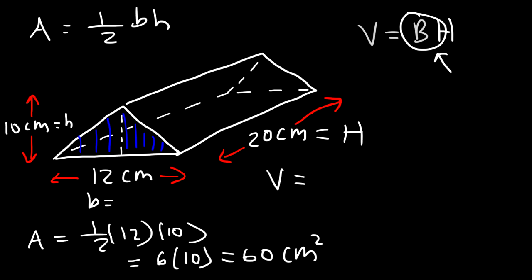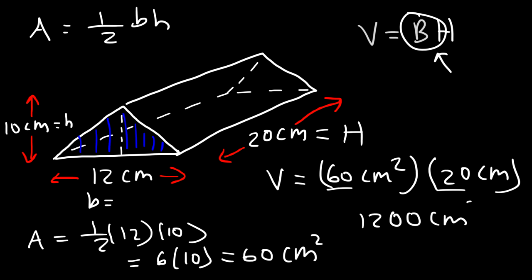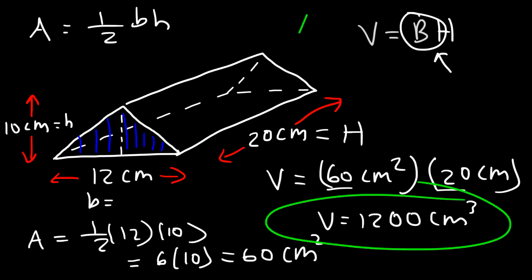So the volume of the prism is going to be the area of the base, which is 60 square centimeters, times the height of the prism which is 20 centimeters. So 60 times 20: 6 times 2 is 12, and then we add the two zeros. So the volume is going to be 1200 cubic centimeters. That's a simple way in which you can calculate the volume of a triangular prism.